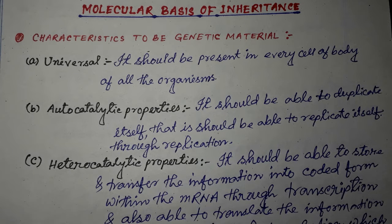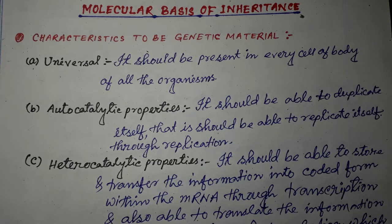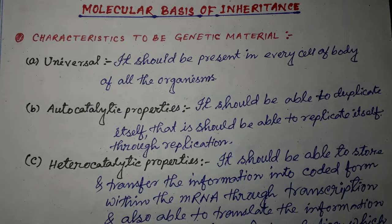So within this second chapter we will discuss the molecular basis of inheritance, within which we will discuss about the characteristics to be a genetic material, and also about the replication, transcription, and translation process of genetic material, the operon concept, and also about the human genome project. So let us start first with the characteristics to be a genetic material.